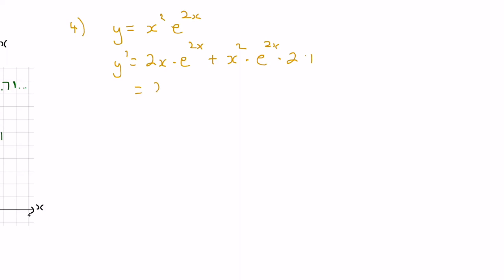Cleaning it up: we get 2x e to the 2x, plus 2 times 1 times x squared times e to the 2x, which is 2x squared e to the 2x. We can factor out a 2, an x, and an e to the 2x, which leaves us with 1 plus x inside, giving us 2x e to the 2x times the quantity 1 plus x.